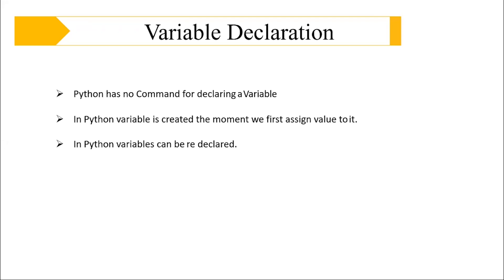In Python, variables can be redeclared or reassigned. For example, initially if I say A equals 100 and after some time I change the value of A to 200, whenever I refer to A, it will be holding the latest value, which is 200, and the value 100 will be overridden because that becomes the old value. This is how variables are redeclared or reassigned in Python.